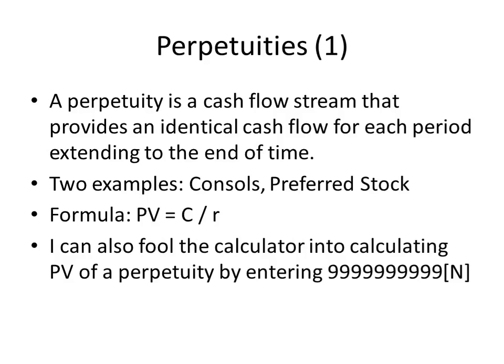Preferred stock also works this way, paying a fixed dividend every quarter or year with no maturity date, so in theory it goes on forever. Valuing such a stream is actually quite easy: take the amount of each identical cash flow and divide by the required rate of return as a decimal — not as a percentage — and that gives the present value. You can also fool your calculator into calculating the present value of a perpetuity by entering ten nines as the number of payments, since the present value of any payments beyond that is so small it doesn't affect the result.